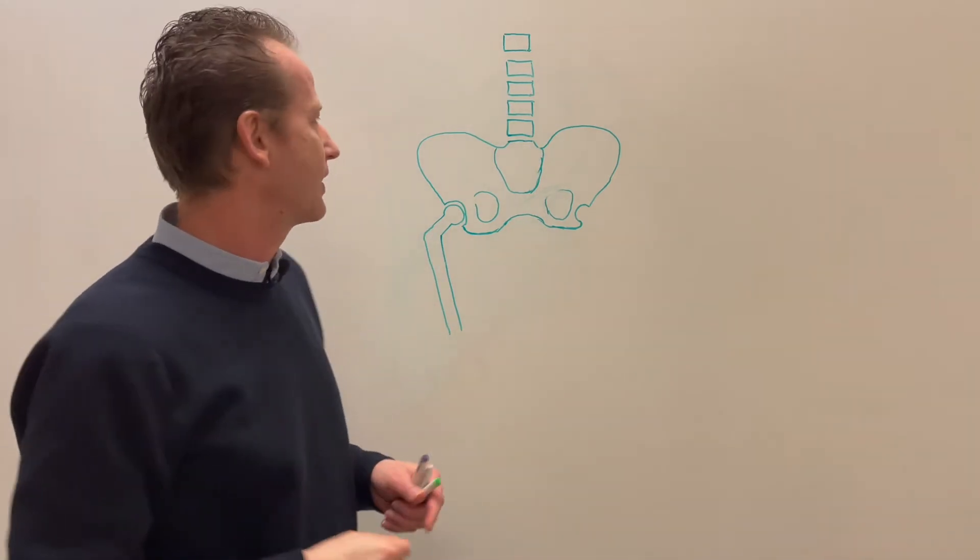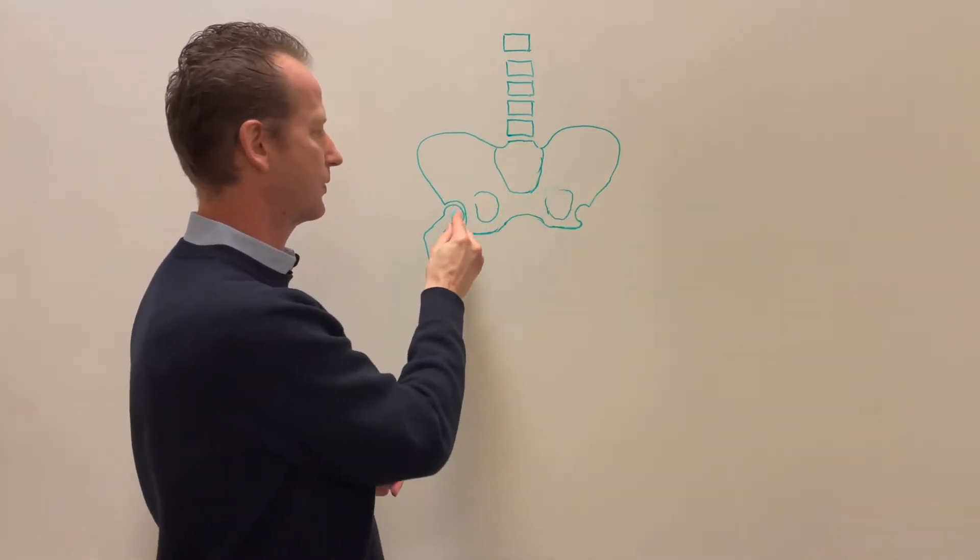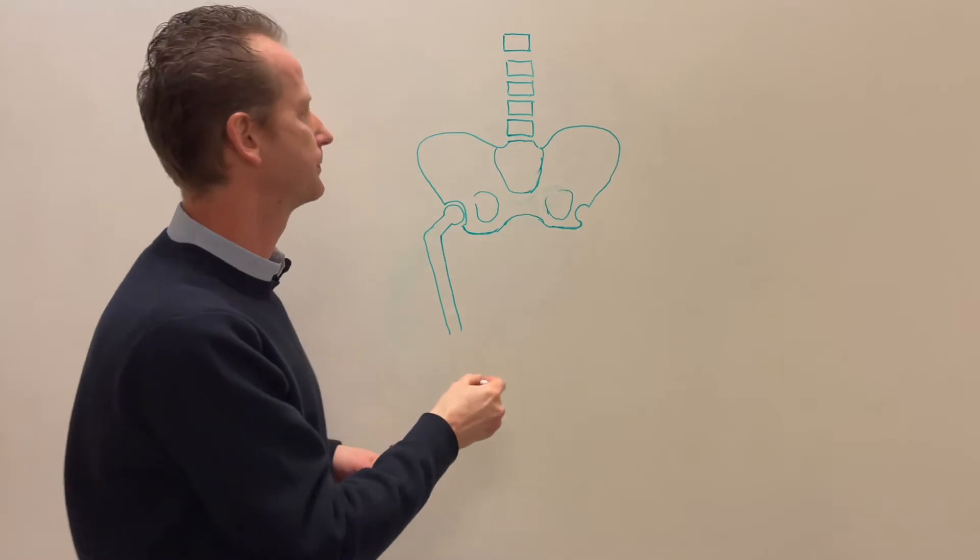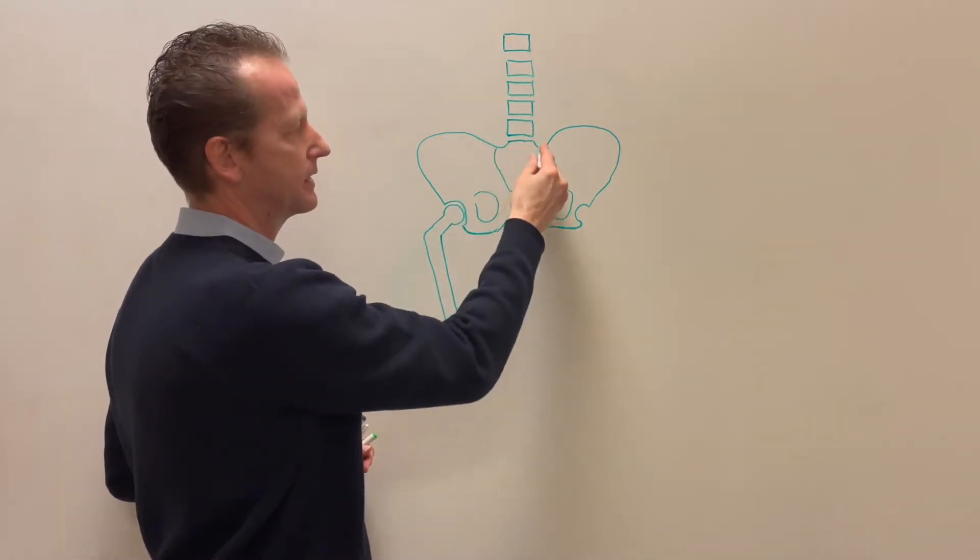So here we have a drawing of a pelvis, right hip joint, femur, spine, and the sacrum.